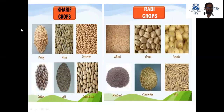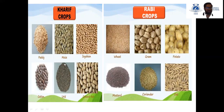Here are images of Kharif crops and Rabi crops. Kharif crops include paddy, maize, soya bean, and cotton. Rabi crops include wheat, gram, and potato.